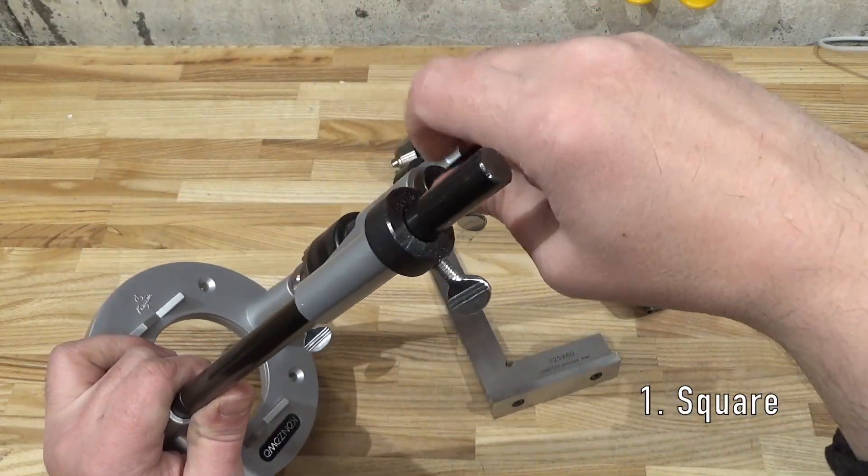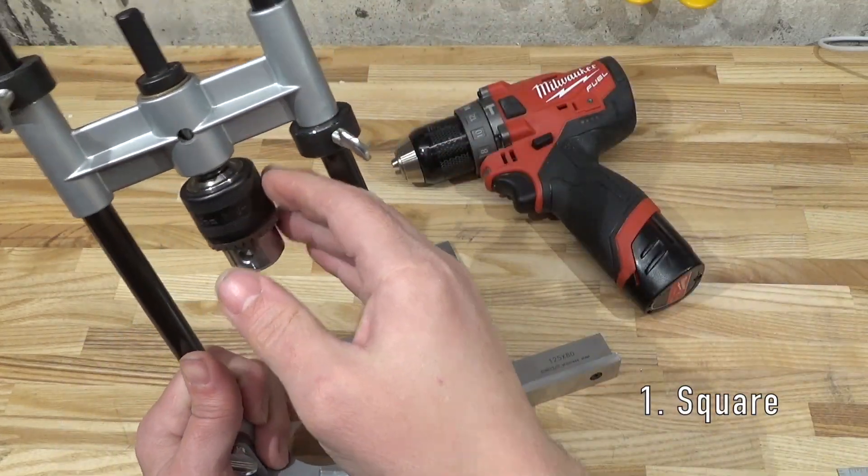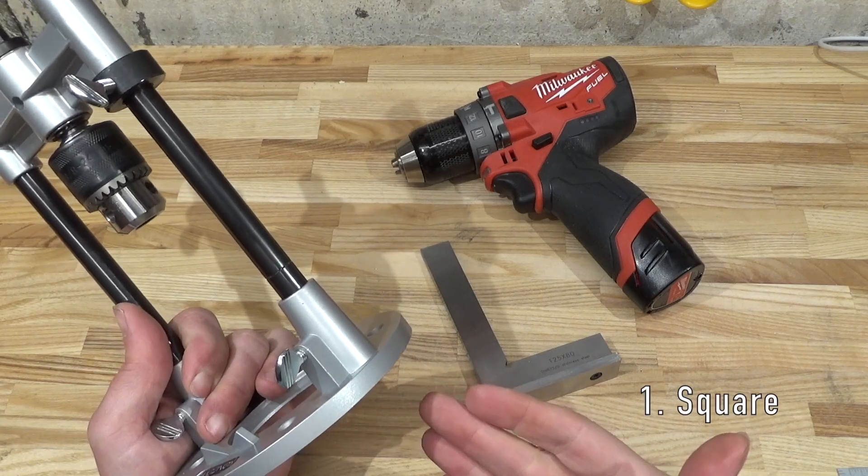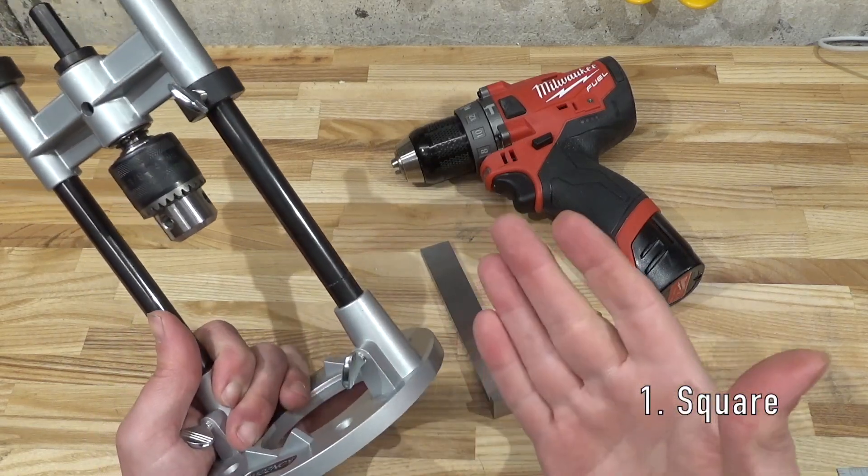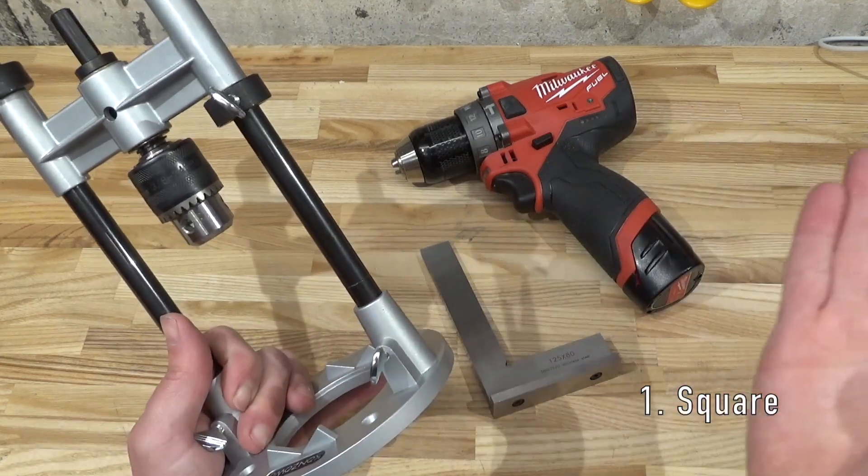Perpendicularity is of absolute importance. You can't even approach getting an accurate hole if you don't achieve that level.